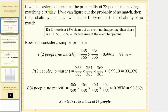To begin, it will be easier to determine the probability of 23 people not having a matching birthday. If we can figure out the probability of no match, then the probability of a match will just be 100% minus the probability of no match. For example, if there's a 25% chance of an event not happening, then there is a 100% minus 25%, or 75% chance of the event happening.